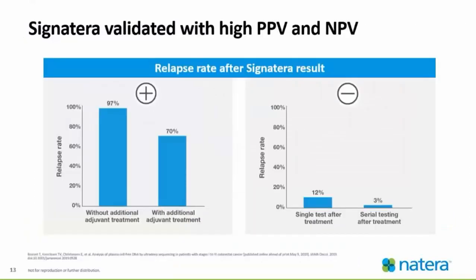Signatera has been validated with high PPV — positive predictive value — and NPV — negative predictive value. Simply put, if a result is positive, the patient will have a 97% chance of recurring if they do not receive additional adjuvant treatment. If the result is negative on that first single test draw, a patient has a 12% chance of recurring. With serial testing, if Signatera testing remains negative, then there is only a 3% chance of recurrence.